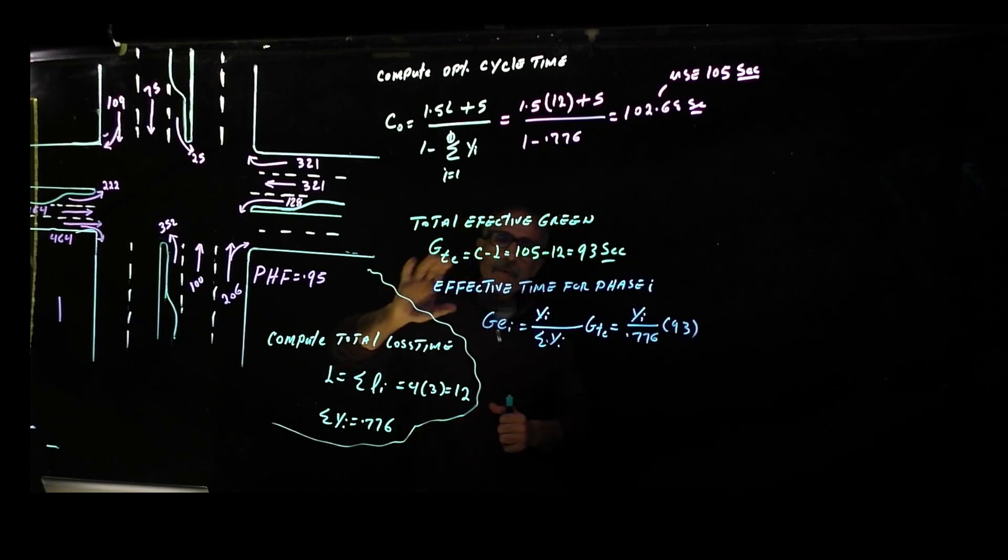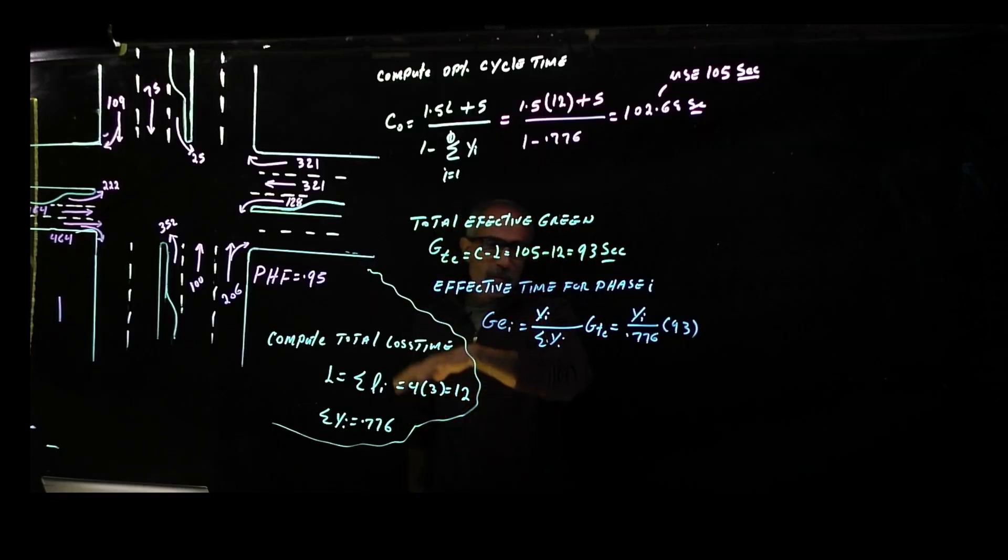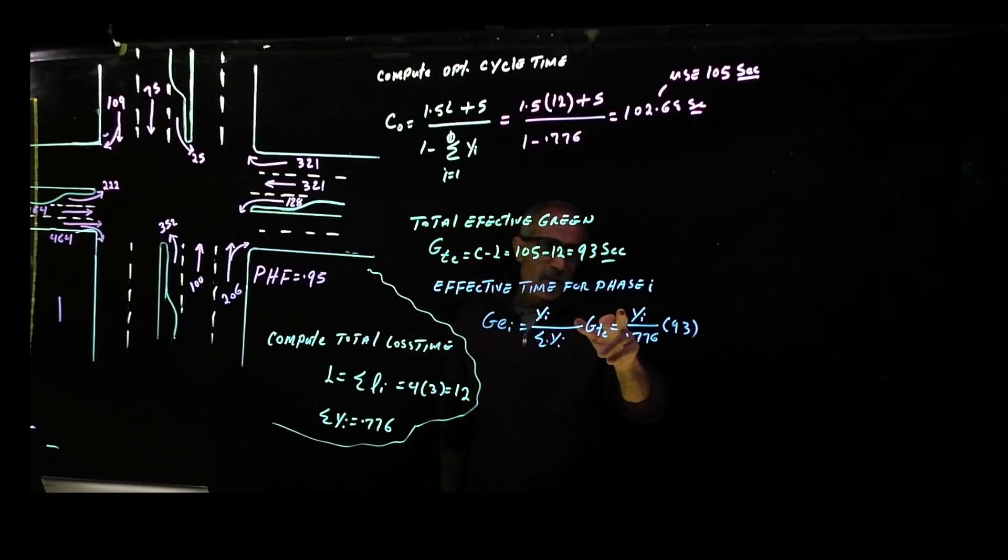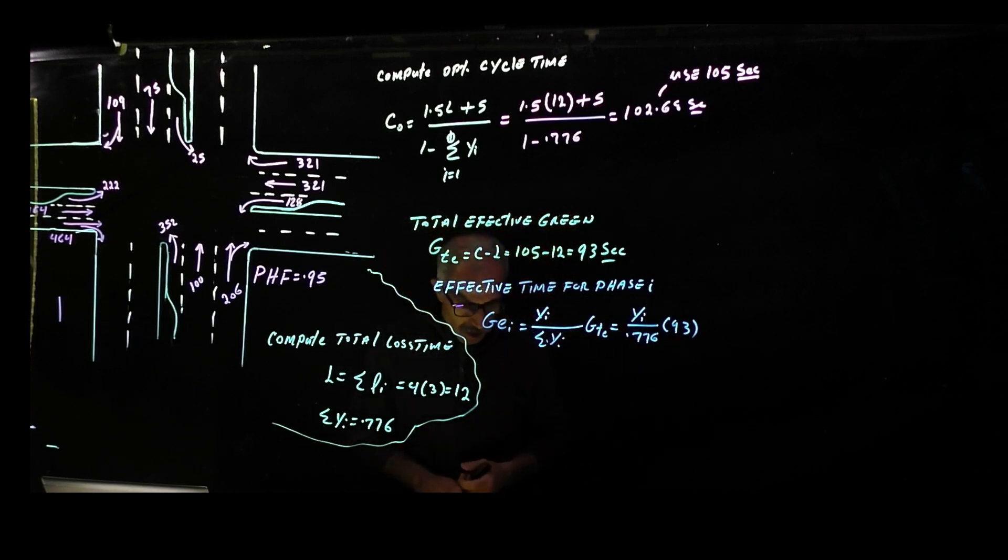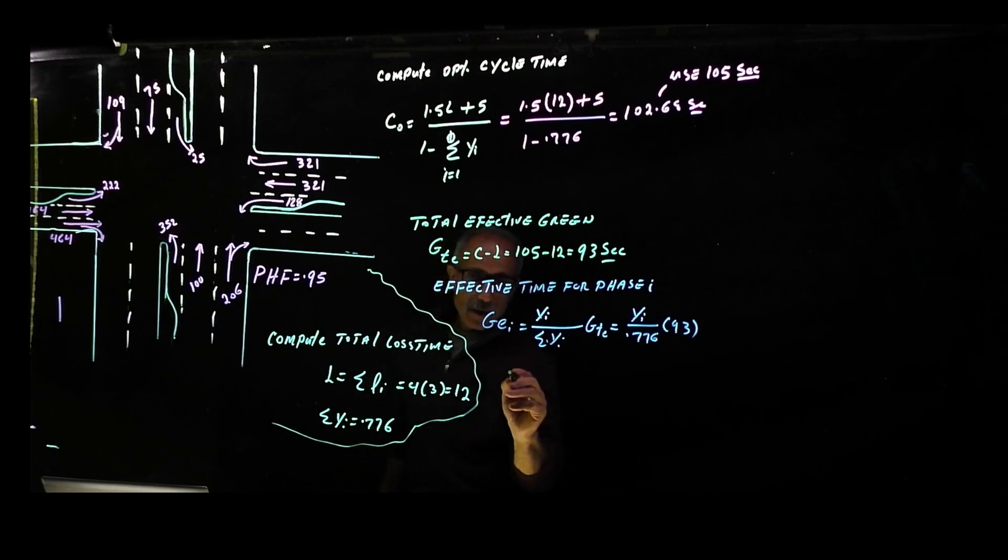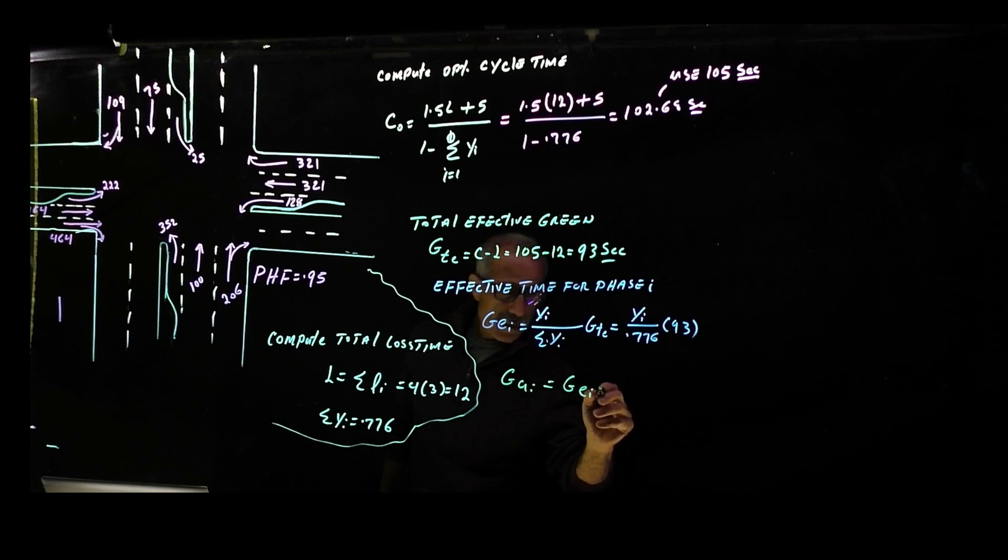Now we're going to go ahead and calculate the effective time for each phase. That's given by this equation, but it's going to become basically Yi divided by 0.776 times 93 seconds. The actual green time GAi equals GEi minus Li minus 3 seconds.